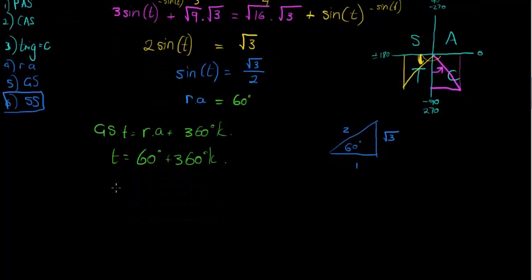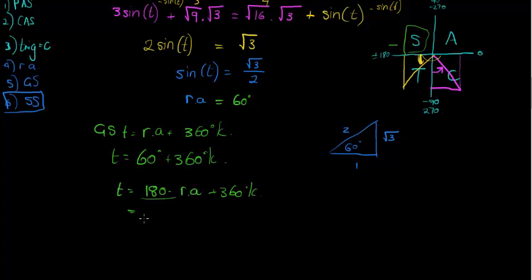The other general solution is where I have 180 minus my reference angle, minus my reference angle, because this is the quadrant, 180 minus that part, where sine is positive. So 180 minus my reference angle plus 360 times k gives me 180 minus 60 gives me 120 degrees plus 360 degrees times k.